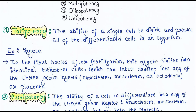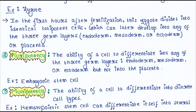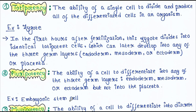Next is pluripotency. The ability of a cell to differentiate into any of the three germ layers — endoderm, mesoderm, or ectoderm — is called pluripotency. However, pluripotent cells cannot form the placenta. Embryonic stem cells are the example, and they have less potency compared to the zygote.